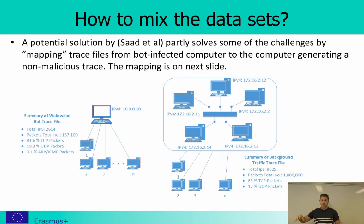Once we have the dataset with malicious data and the dataset with non-malicious data, one way of mixing them is by mapping them together. As shown here, I have two kinds of traffic: my bot trace file, which is done locally, and a larger network where I have a background traffic trace file which I believe is non-malicious. In the next slide, I will show how these can be mapped together.